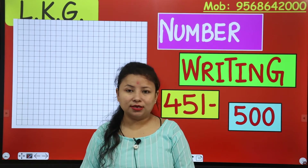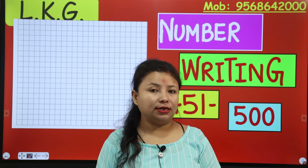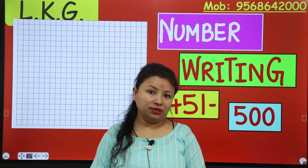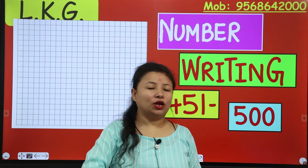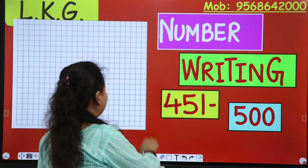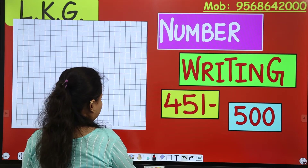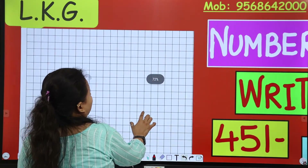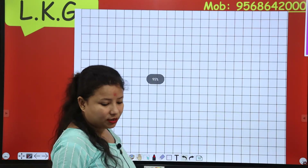But before starting my class, I have a question for you. The question is: which juicy fruit contains lots of vitamin C? The answer is orange. Now today we will start number writing 451 to 500.